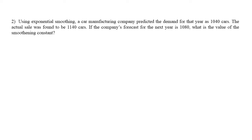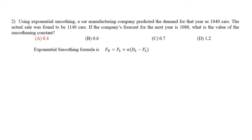Next year the company has again made a forecast of 1,080. Rather than asking what the actual sale will be, they are asking for the smoothing constant alpha. The options for this question are 0.4, 0.6, 0.7, and 1.2, and option A — 0.4 — is the correct answer, marked in red. Here is the exponential smoothing formula.